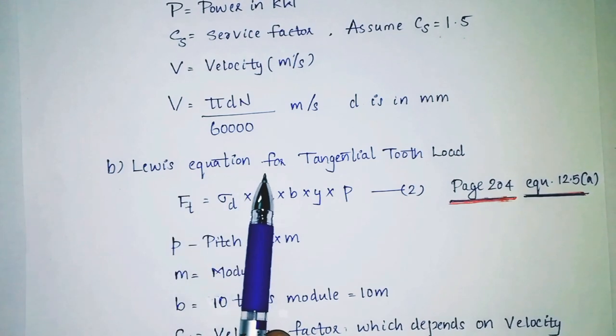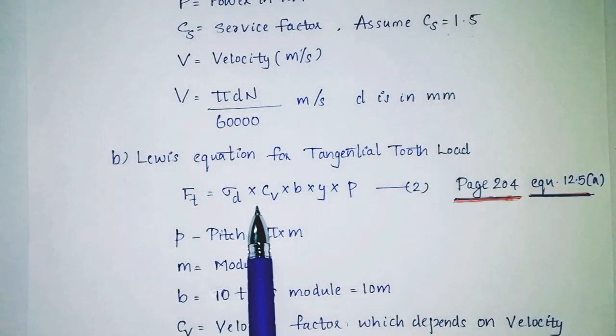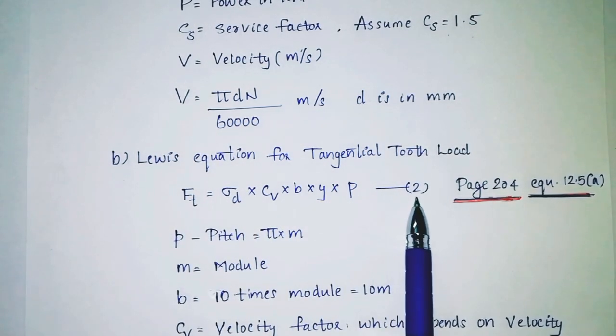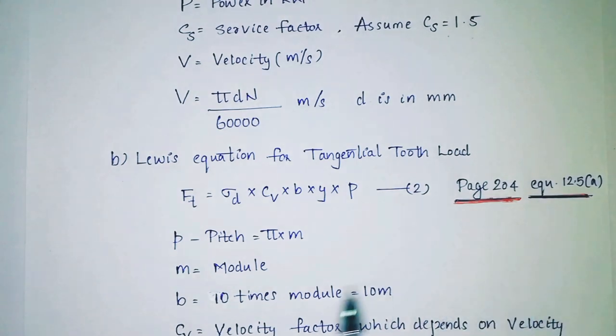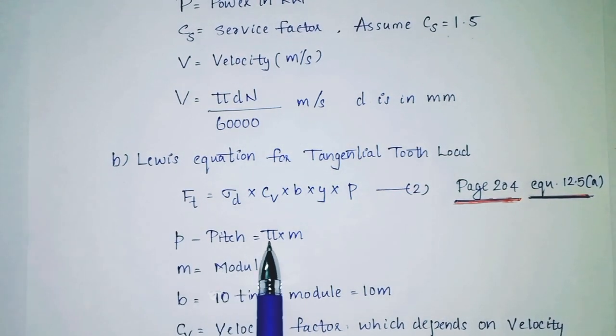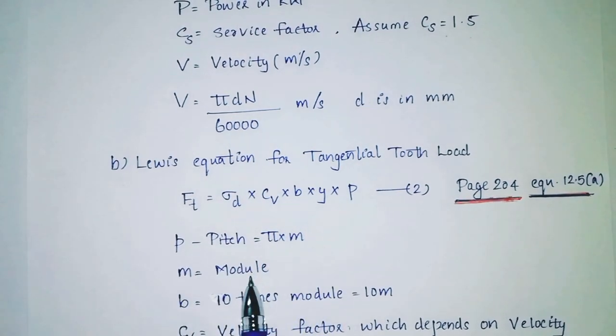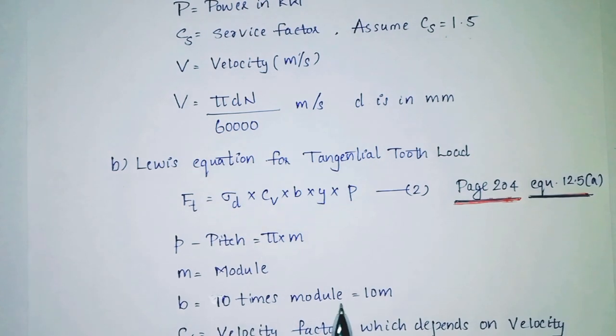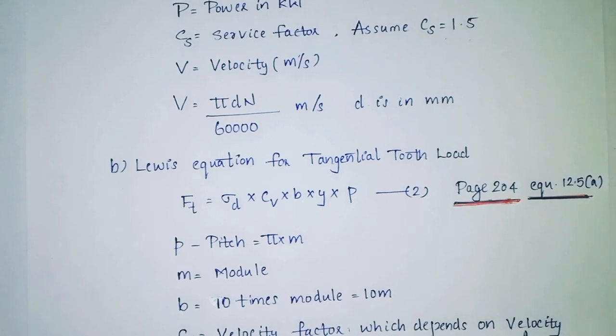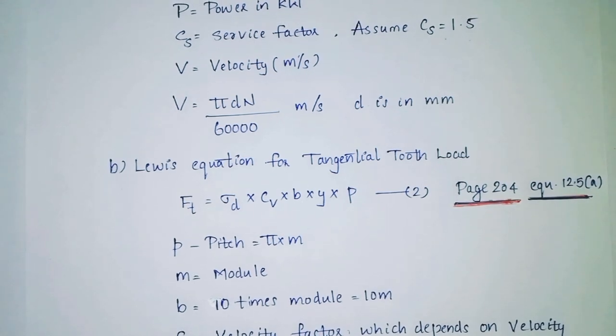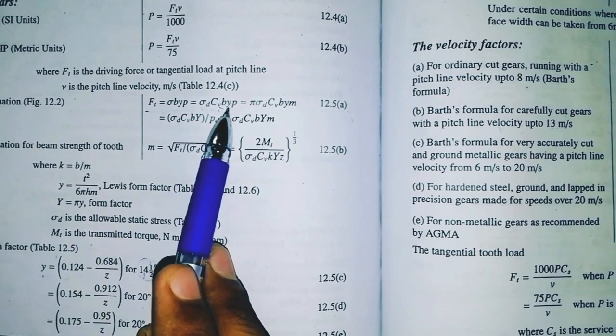Lewis equation for tangential tooth load: Ft equals sigma d into cv into b into y into p, equation 2. This is page number 24, equation 12.5a. P pitch equals pi into m. B face width equals 10 times module, equals 10 m. Cv is velocity factor which depends on velocity. This is the Ft equation: sigma d into cv into b into y into p.